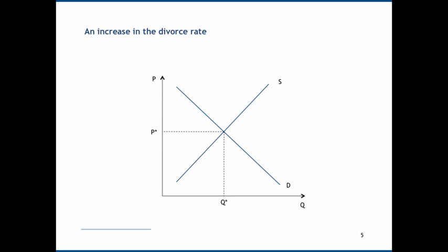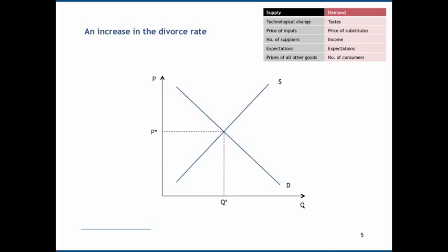Let's give an example. Let's consider an increase in the divorce rate and how this should affect UK housing. We'll start off with our basic demand and supply diagram. Let's bring up our list of causes of shock. An increase in the divorce rate is going to increase the number of consumers; this is a demand shock. Step one of comparative statics is to identify whether it's a supply shock or a demand shock.